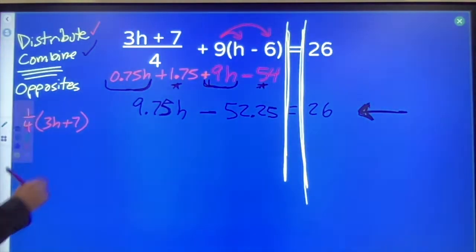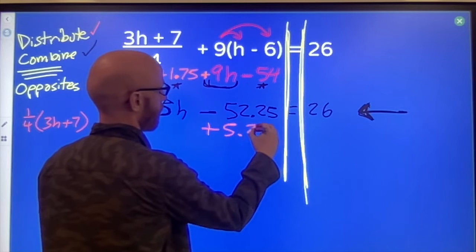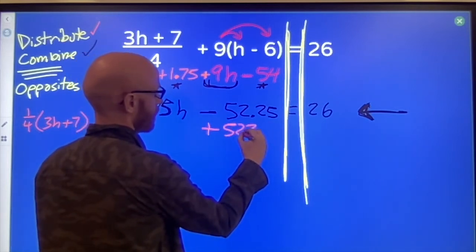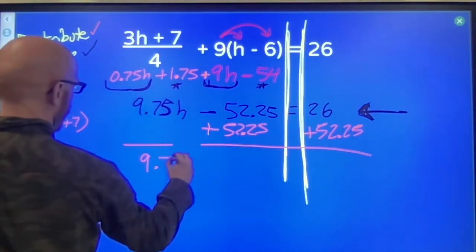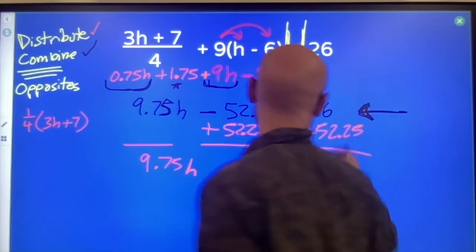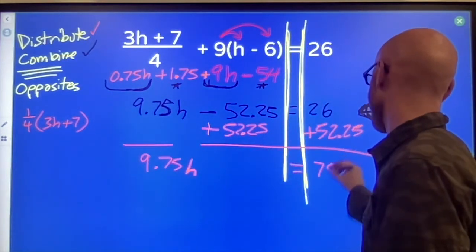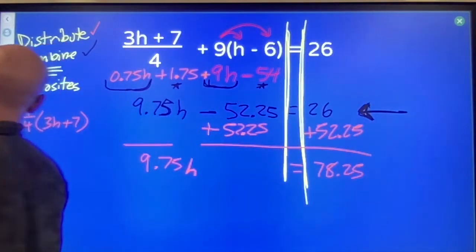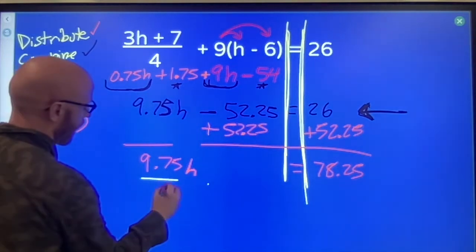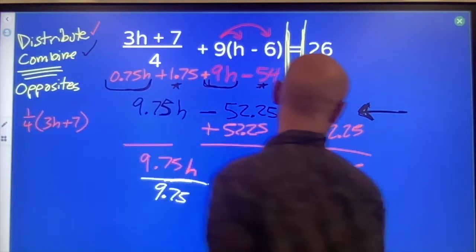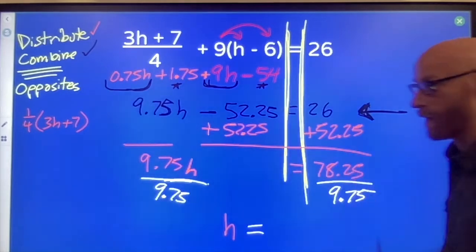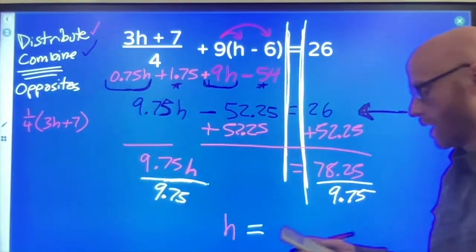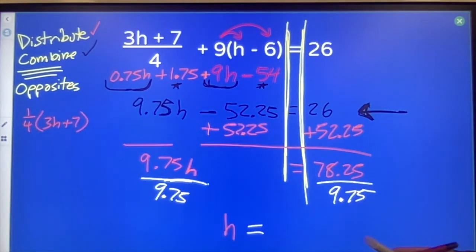Just to finish this off, add 52.25 on both sides. We get 9.75 h's equal to 78.25 and then divide by 9.75.